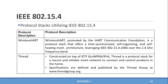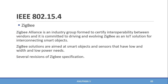Thread is a protocol stack which utilizes IEEE 802.15.4, constructed on top of IETF 6LoWPAN and IPv6. Thread is a protocol stack for a secure and reliable mesh network to connect and control products in the home, making it mainly used in home automation systems. The specifications are defined and published by the Thread Group at www.threadgroup.org.